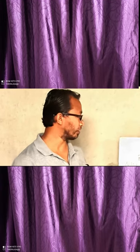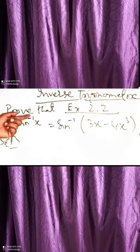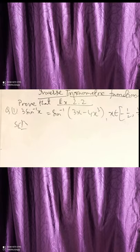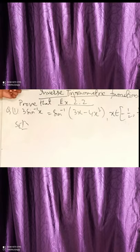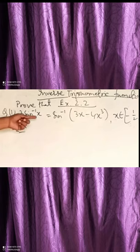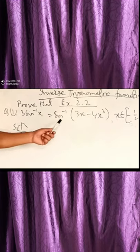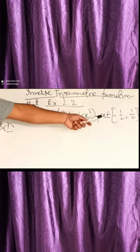We have already discussed the properties of inverse trigonometric functions. Today, under Exercise 2.2, the first question is: prove that 3sin⁻¹(x) equals sin⁻¹(3x minus 4x³).